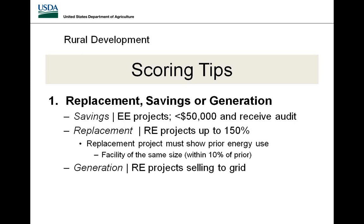Replacement projects get points when they replace energy used on their operation — the more energy offset, the higher the points, up until 150%. Above that threshold, you're considered an energy generation project, which means a renewable energy project selling directly to the grid. Replacement projects must show prior energy use in a facility of the same size or within 10% more or less. A new building with solar panels would not receive replacement points; an existing building does.